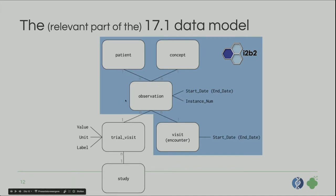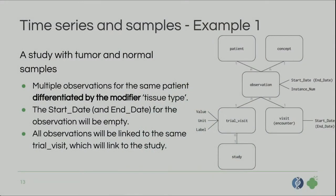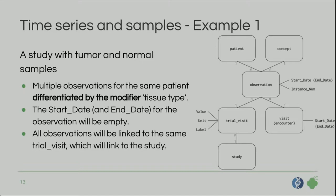Modifiers add an extra dimension to make observations unique. Let me go through three examples. First, a study with tumor and normal samples: currently in Transmart you'd need to make different concepts, but here we use a tissue modifier — 'tumor' and 'normal' — on the same observation to make them unique. The start and end date can be left empty, and since there are no trial visits, you add one trial visit row for all observations to link them to the study.